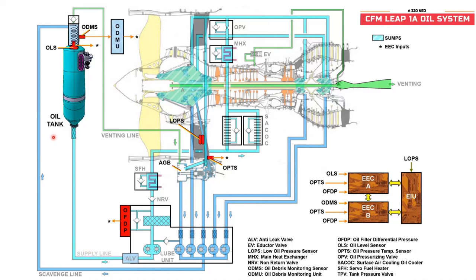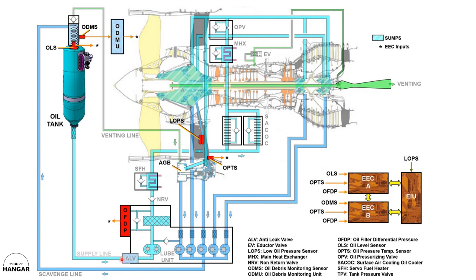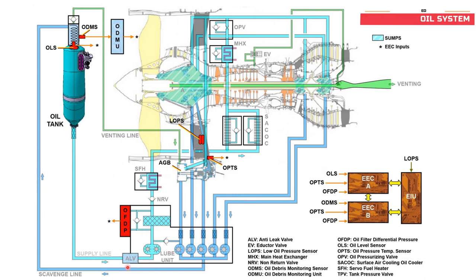We will look at the oil system in more detail. We have our oil tank on the right-hand side of the engine when looking forward. From the tank, through the filter, it comes to the anti-leakage valve first. This anti-leakage valve is installed on the loop unit. Its function is to prevent oil from draining back to the oil tank from the loop unit when the engine is stopped.